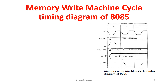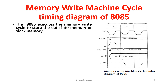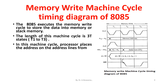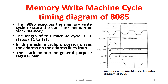The memory write machine cycle timing diagram of the 8085 is represented here. The 8085 microprocessor executes the memory write cycle to store data into data memory or stack memory. The length of this machine cycle is three T states, from T1 to T3. In this machine cycle, the processor places the address on the address lines from the stack pointer or general purpose register pair, and through the write process stores the data into the addressed memory location.